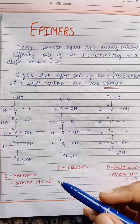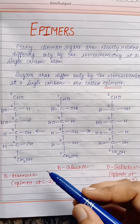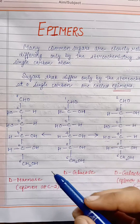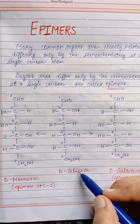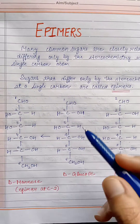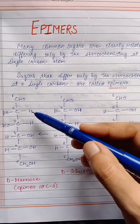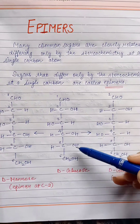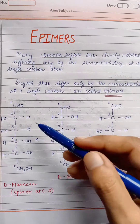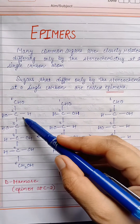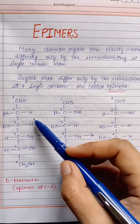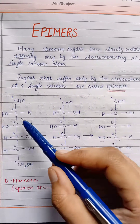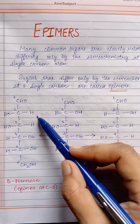As we can see in this structure of D-mannose and D-glucose, the remaining structure is similar but varies at carbon number 2. Here you can see the position of the OH group.